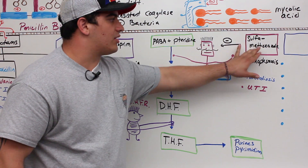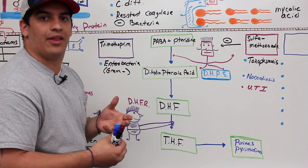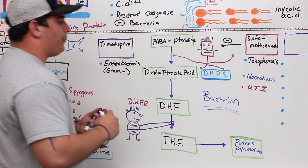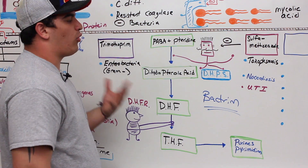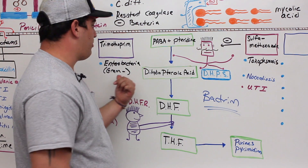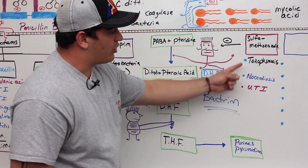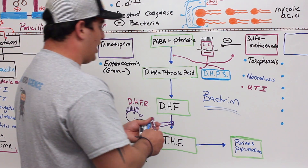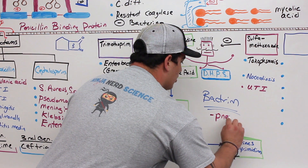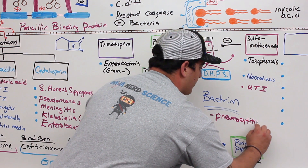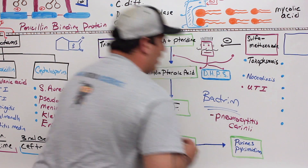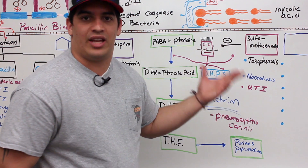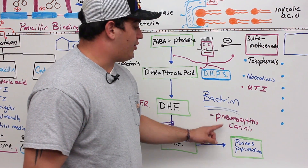Trimethoprim and sulfamethoxazole are best when combined — together they're called Bactrim, by brand name. Together they have a broader spectrum, able to treat enterobacteria infections, toxoplasmosis, nocardiosis, UTIs, and respiratory tract infections. Bactrim is also good at treating pneumocystis carinii, a yeast-caused infection more common in immunocompromised individuals like HIV/AIDS patients or those on chemotherapy.